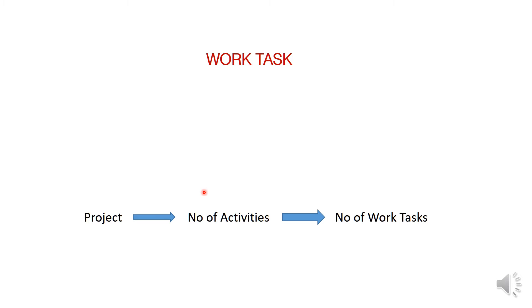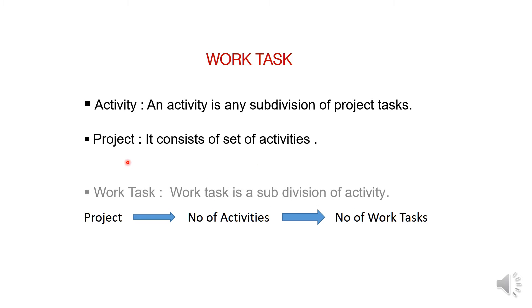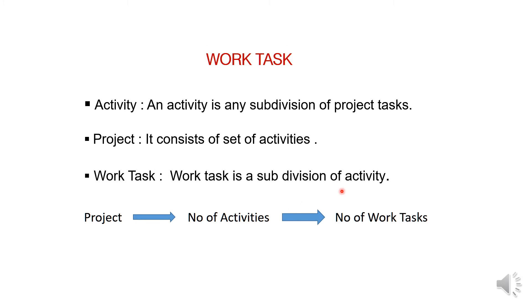Work task is the allocation of work and it includes the activities. Activities are the subdivision of project tasks, and the project is the set of activities. Work task is the subdivision of activities. So activities are part of the project, and work task is part of the activity.